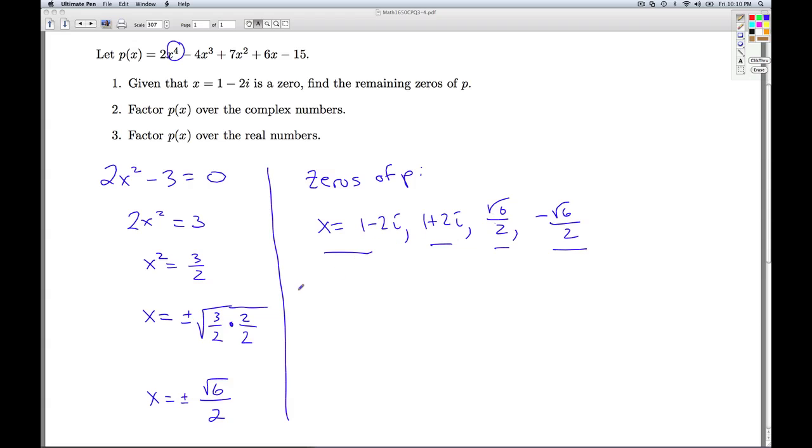Now since we've got the zeros, we can do number 2. Number 2 asks us to factor the polynomial P(x) over the complex numbers. That means we need to completely break it down over the complex numbers. According to the complex factorization theorem, we can get this by taking the leading coefficient times x minus each zero to the corresponding multiplicity.